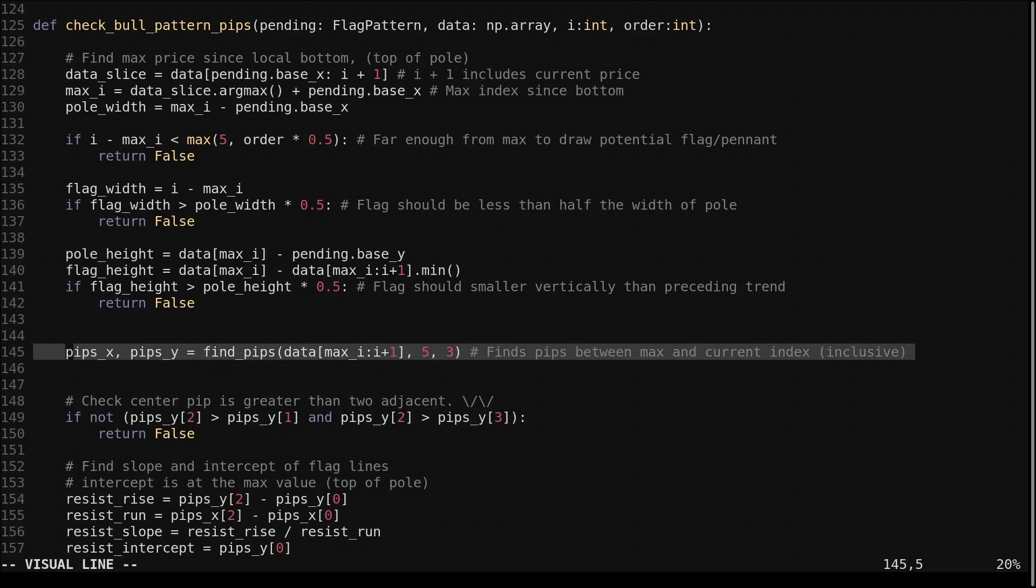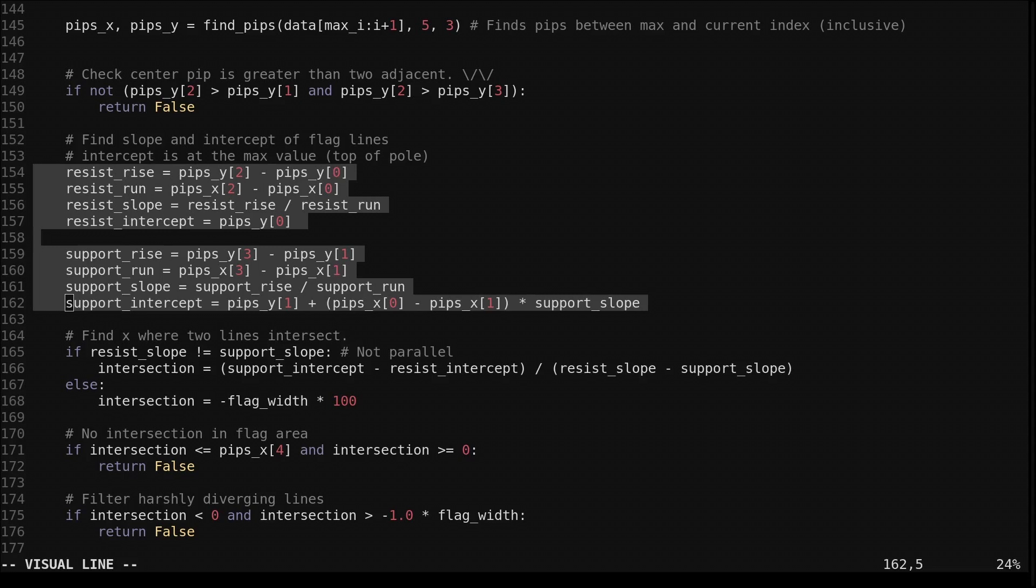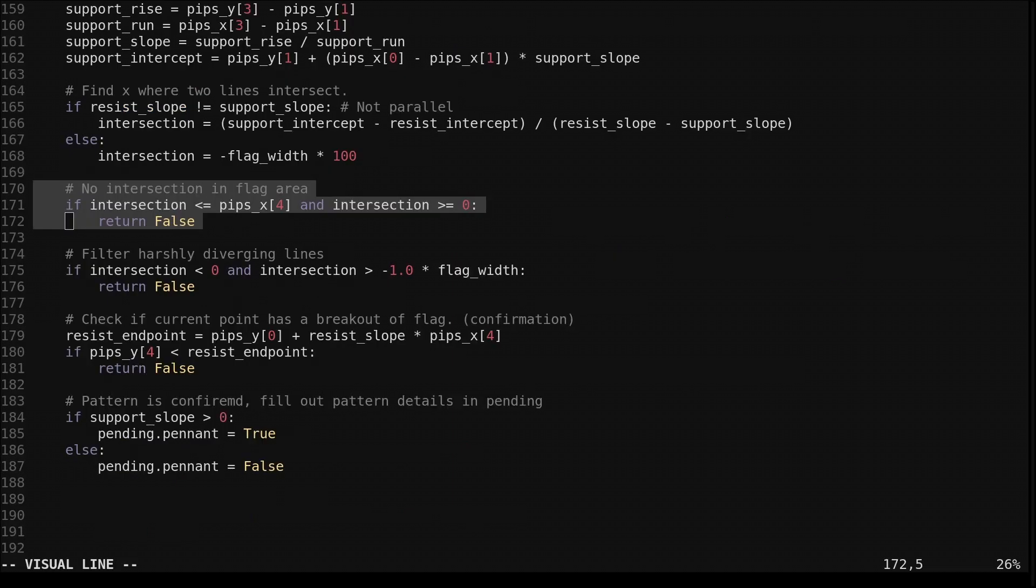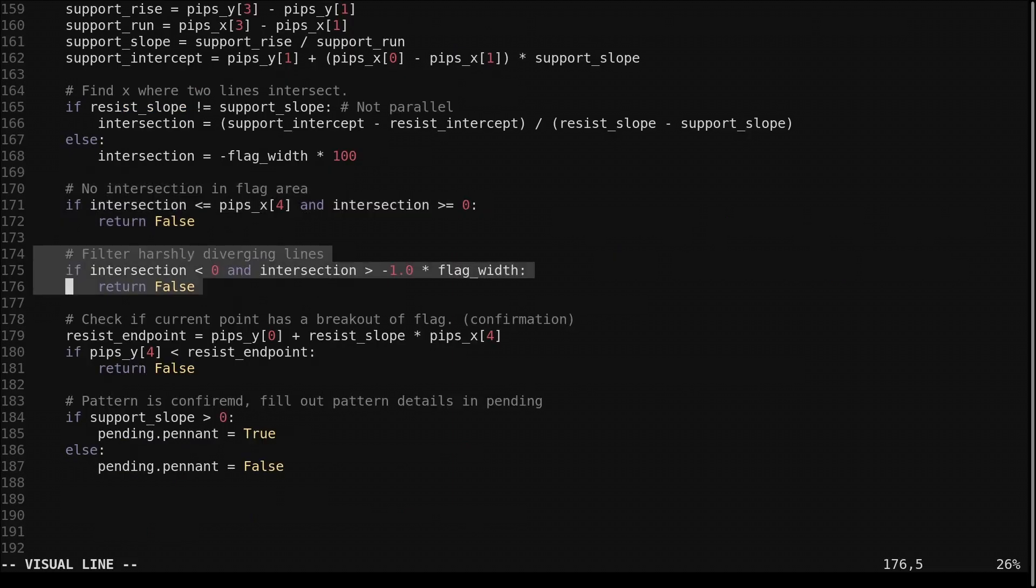If we've made it this far, we find the 5 perceptually important points from the tip to the current point. The center pip at index 2 needs to be greater than its neighbors to ensure the W shape. We then compute the slope and intercept of the flag lines. We find the index where the two lines intersect. If they are parallel, we set the intersection to a large negative value. We check to ensure the lines don't intersect in the flag area. If the intersection is negative, it is before the pole tip, which means the lines are diverging. If the intersection is negative and too close to the tip, the lines are diverging a lot, so we filter that out. This negative 1.0 could be replaced with a larger negative value to further filter diverging flags.